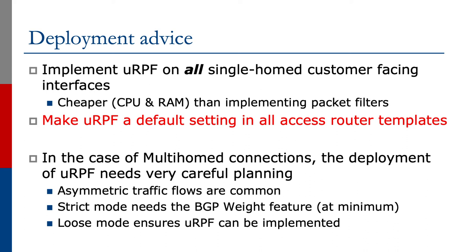Asymmetric traffic flows are common, and strict mode URPF would mean that at least the BGP wait feature would need to be implemented. Loose mode ensures URPF can be implemented, but again we advise that care is needed when deploying this. There is the danger that packets could be dropped with any misconfiguration or misplanned implementation of URPF. Indeed, most operators will avoid using URPF in situations of multi-homed customer connections.